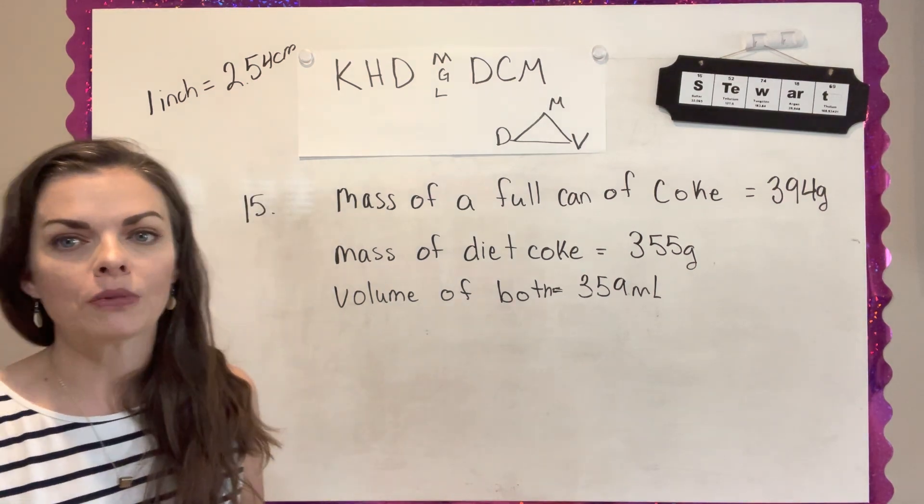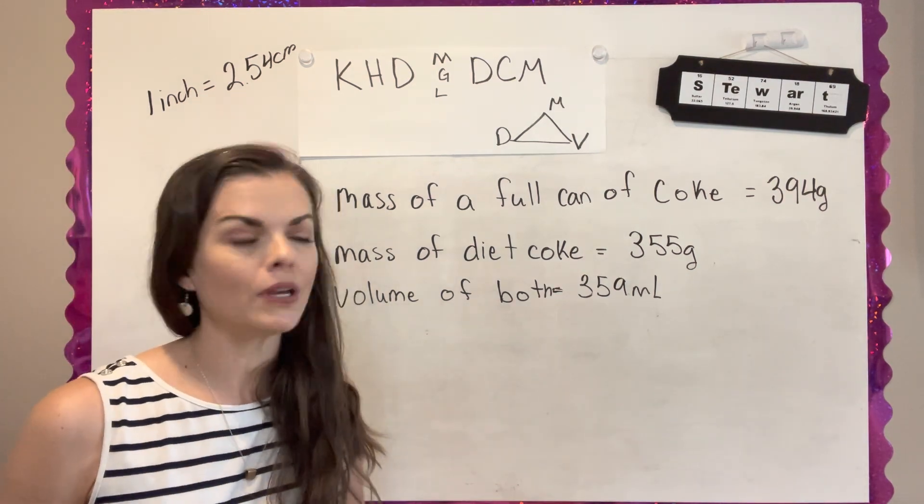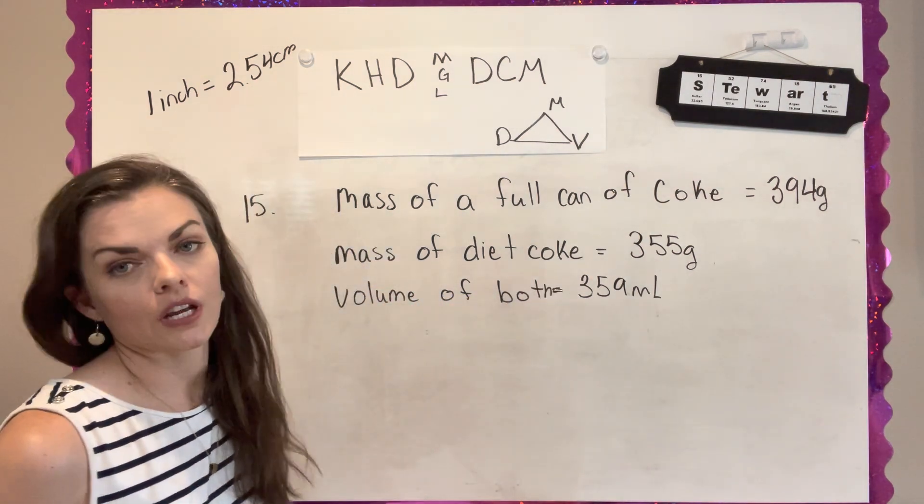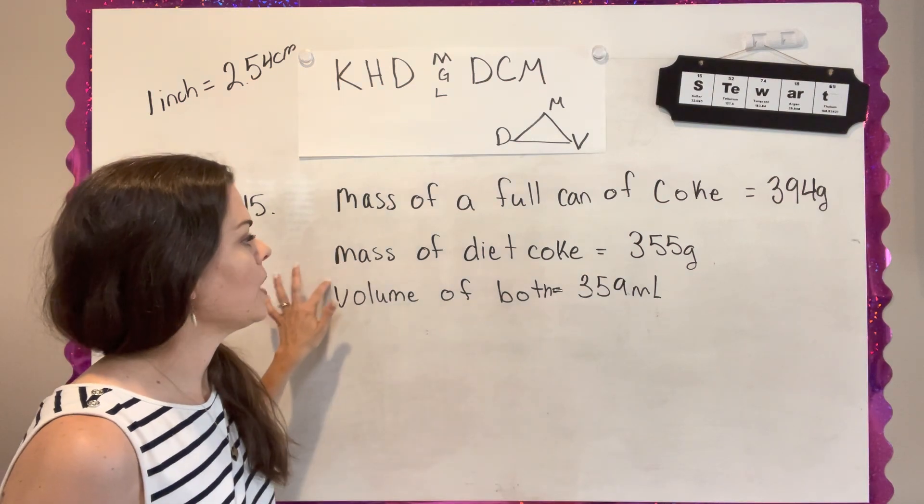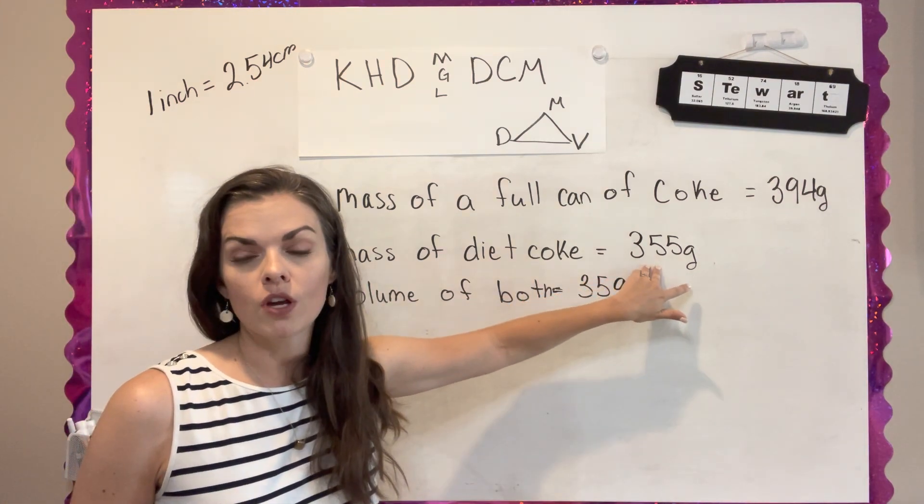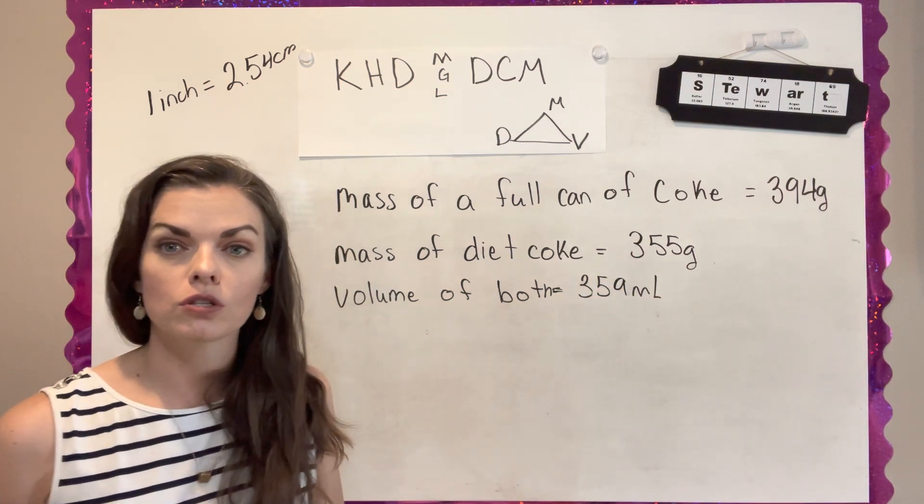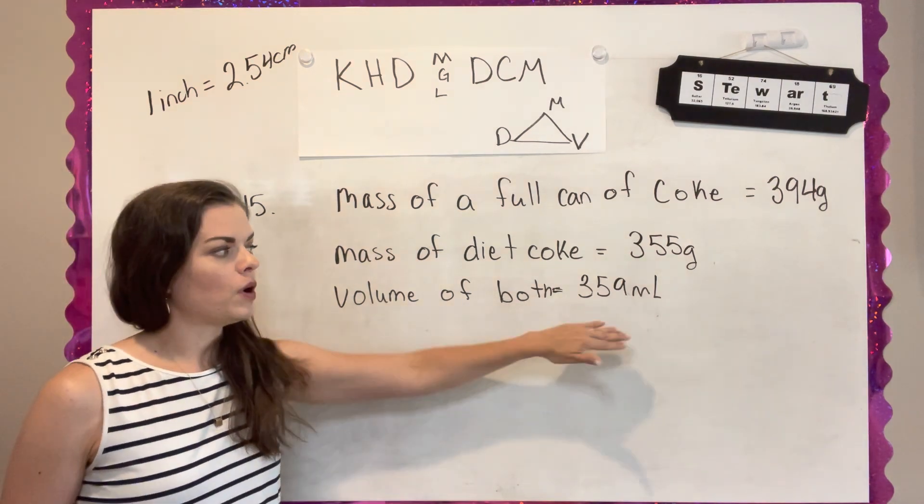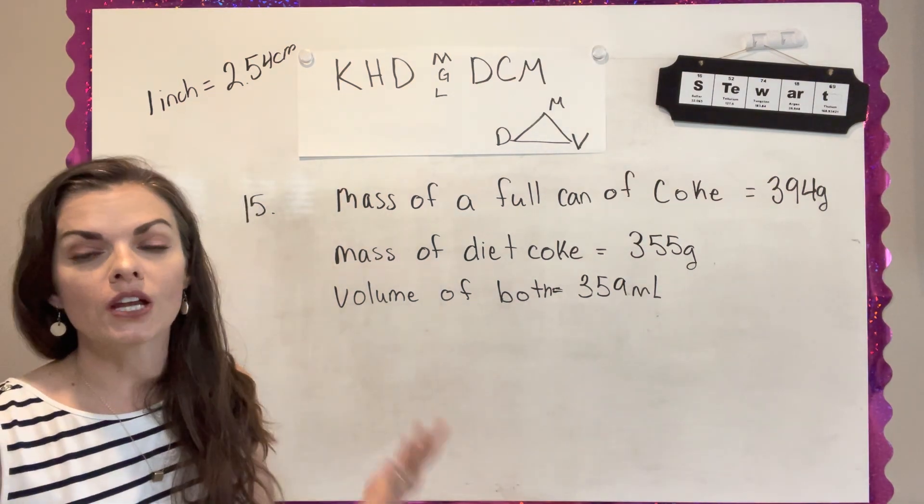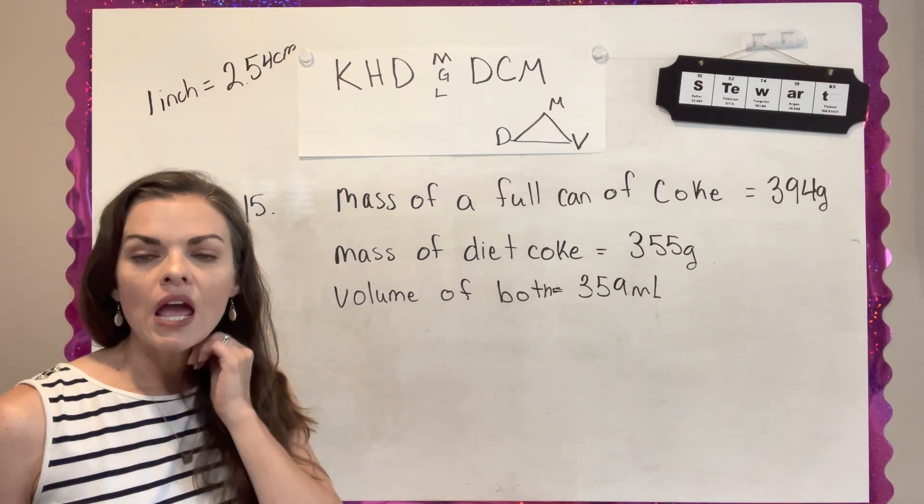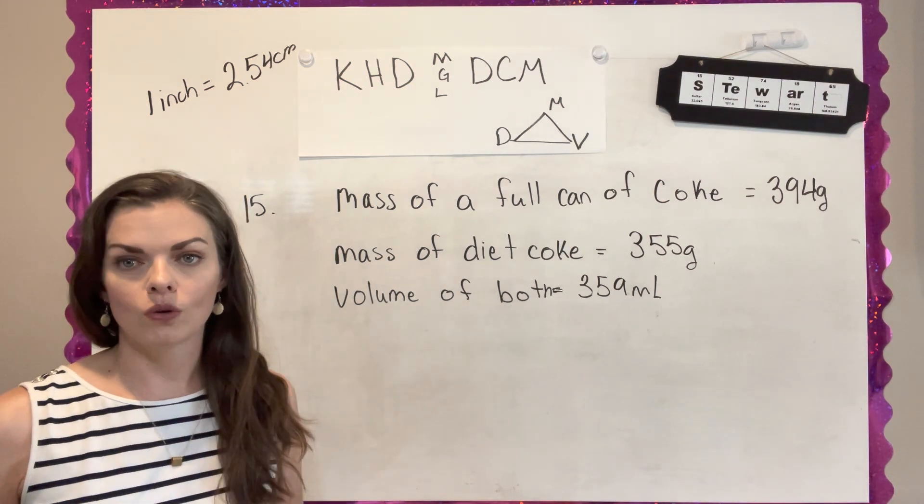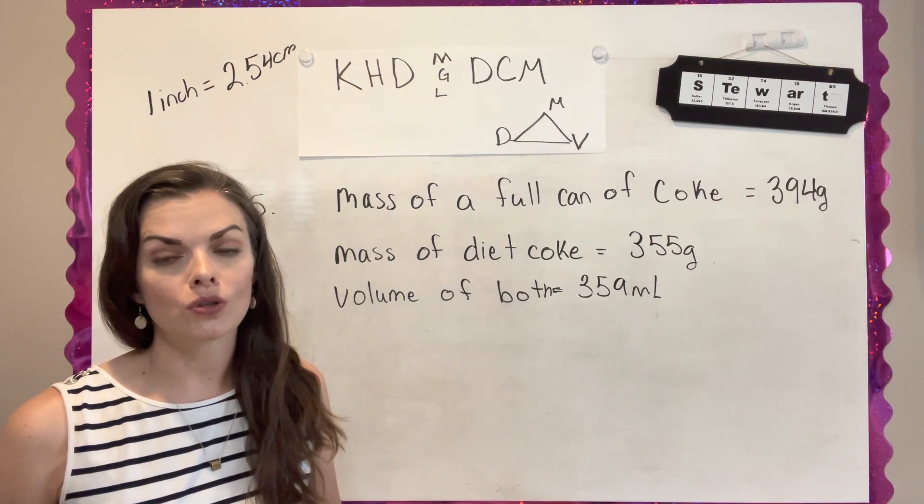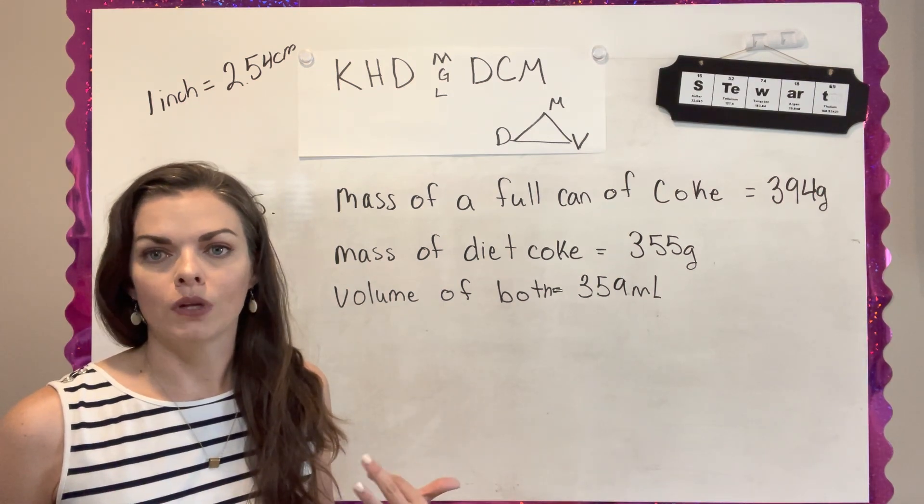Number 15 is actually a fun experiment. If you actually do the experiment, but it basically tells me the mass of a full can of regular Coke is 394 grams, but the mass of diet Coke is actually less at 355 grams. This is because diet Coke uses an artificial sweetener and it has a lesser mass. And the volume of both is 359 milliliters. Question asks what, like, will it float in water? And so to tell if it will float in water, we need to figure out if it's denser, more dense or less dense than water.